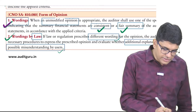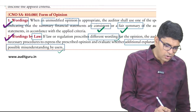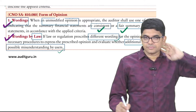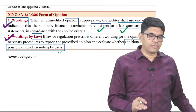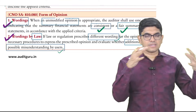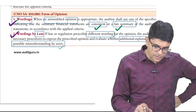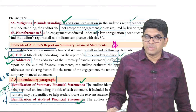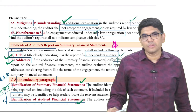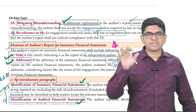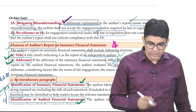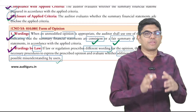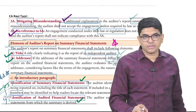Form of opinion for SA 810: the wordings will be whether it is a 'fair summary' or 'consistent summary.' Wordings can be prescribed by law — if law prescribes something which is misleading, think about whether we can add a few words to make it better and more understandable. If law prescribes unacceptable wordings and additional disclosures cannot mitigate the misunderstanding, and you still have to do the audit, don't give reference to SA 810. The audit report format: title is 'Independent Auditor's Report on Summary Financial Statements'; addressee can be the appointing authority or board of directors.